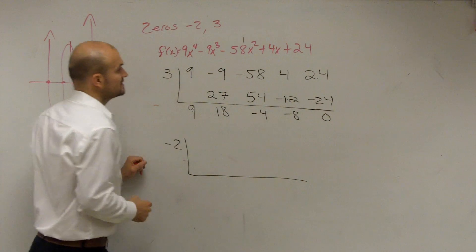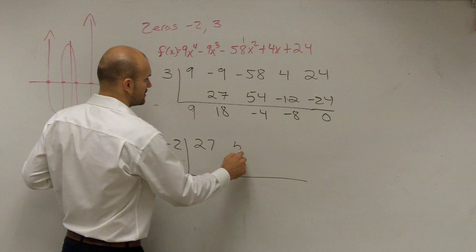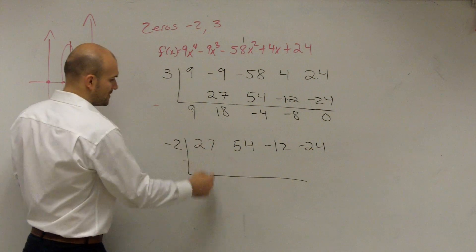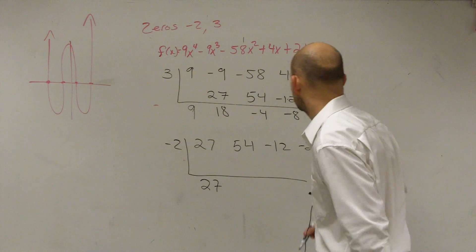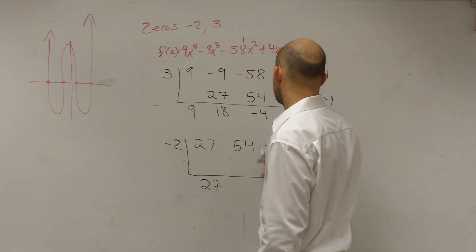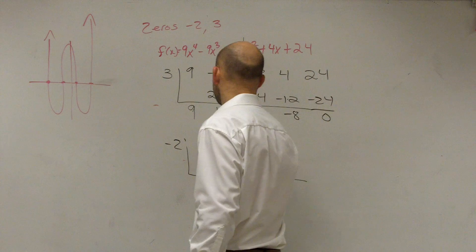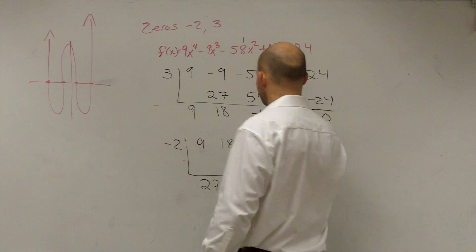So what I can do is I can go and see if negative 2 works. So now I'm going to use synthetic division again. But remember, I can use my former result to test it. So bring down 27. I was looking at the wrong line. 9, 18, negative 4, negative 8. Take the result.